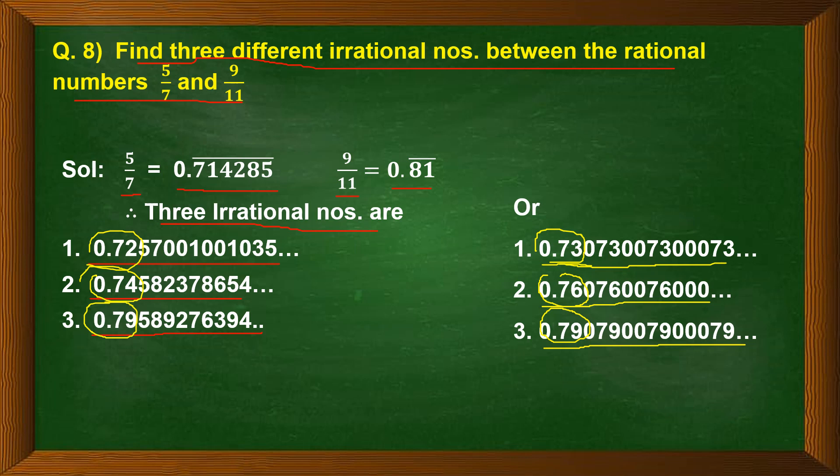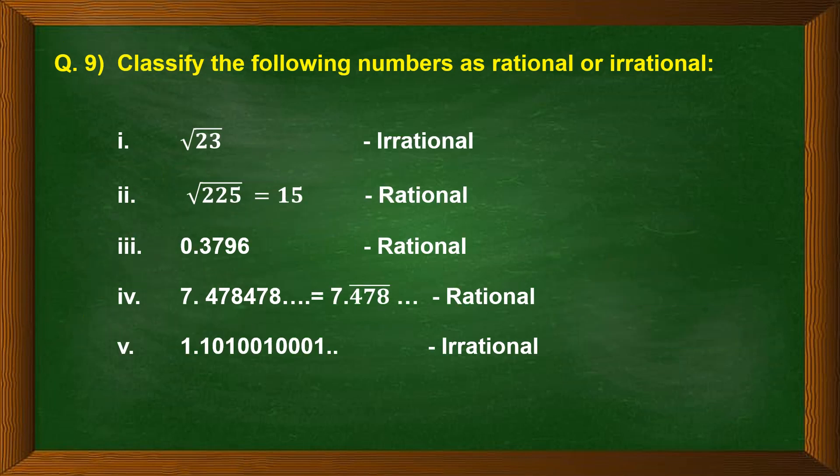In question 9, they are saying classify the following numbers as rational or irrational numbers. There are five questions, or you can say five numbers, which they have given to us and we have to classify them as rational or irrational.